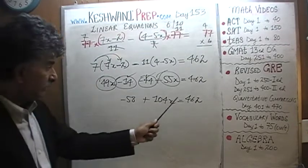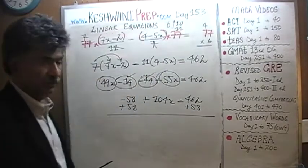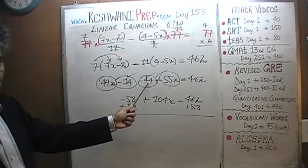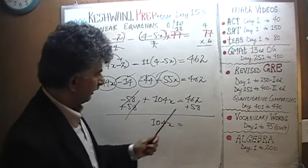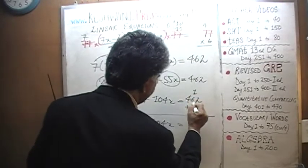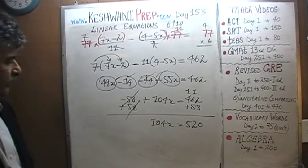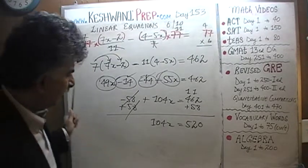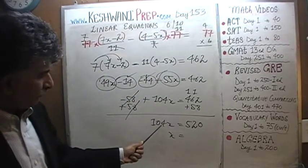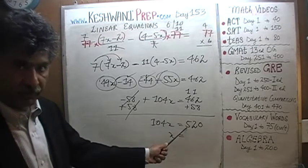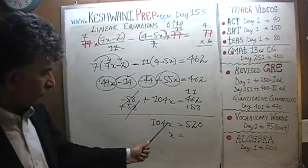We have to get rid of this negative 58. We're going to add 58 to both sides of the equation so that negative 58 drops out. 104x equals 462 plus 58, which is 520. If 104x equals 520, how much do you suppose x is? Think of it as: 100 times 5 is 500, and 4 times 5 is 20 — so 104 times 5 is 520. Therefore x equals 5.